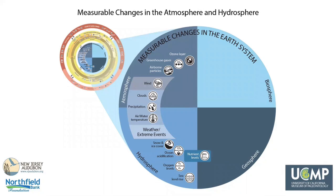The next few slides outline some of the measurable changes that occur in the atmosphere and hydrosphere. For example, we measure greenhouse gas levels and airborne particles in the atmosphere, and sea level rise and ocean acidification in the hydrosphere. Notice that in how the Earth system works — the yellow ring — we talked about climate, but here we talk about phenomena which we measure on an hourly and daily basis: temperature, precipitation, clouds, and wind, which we call weather.